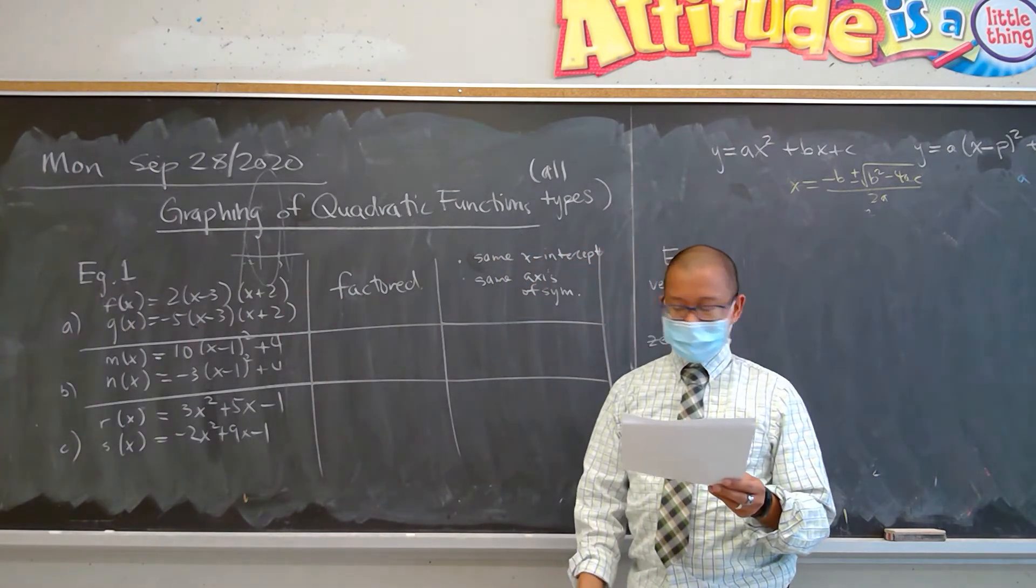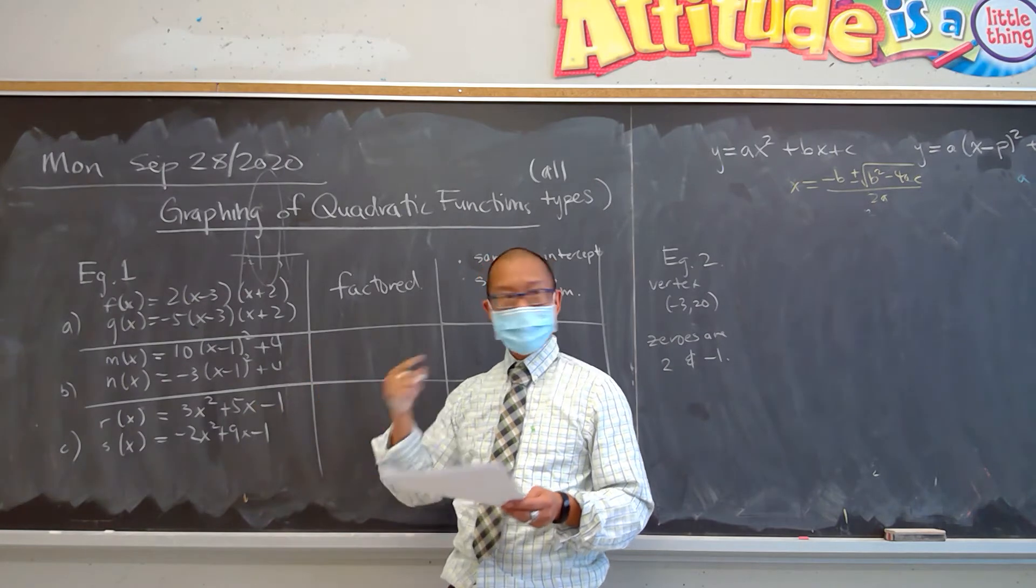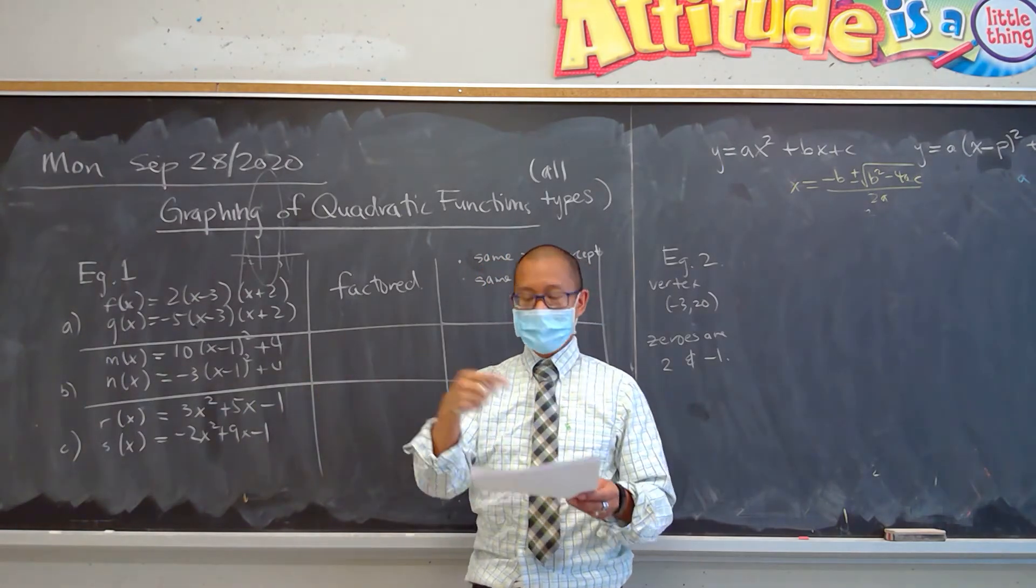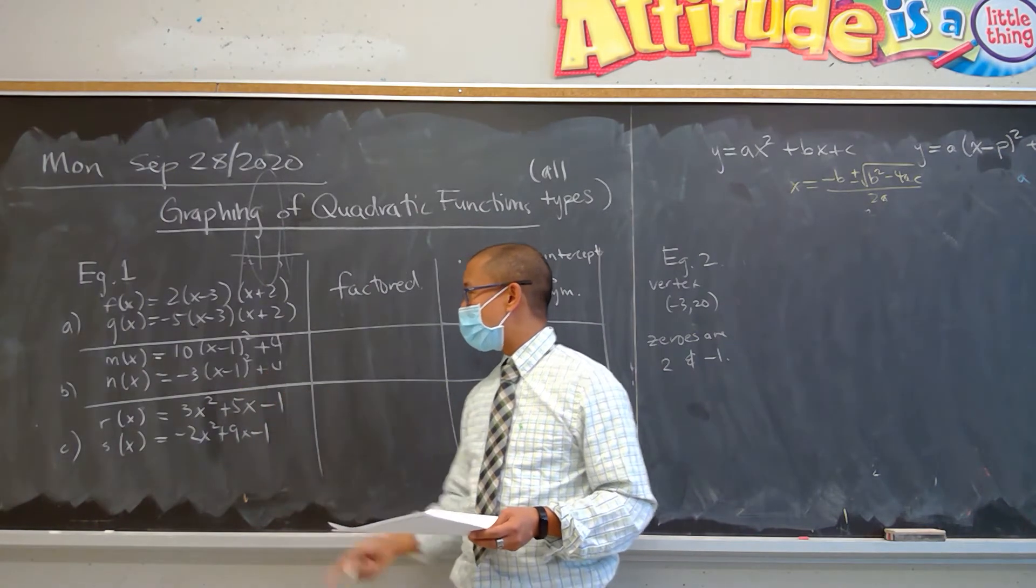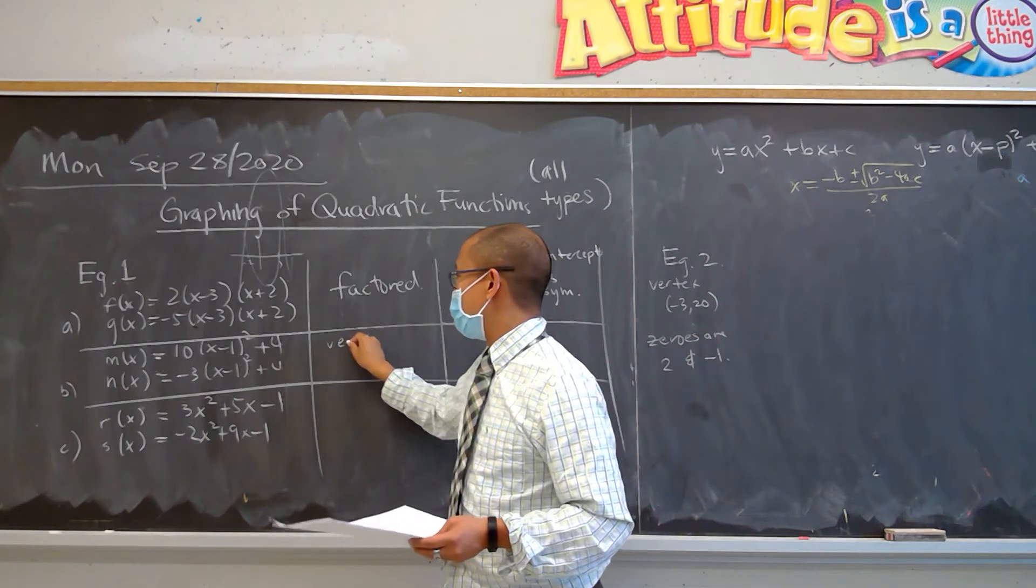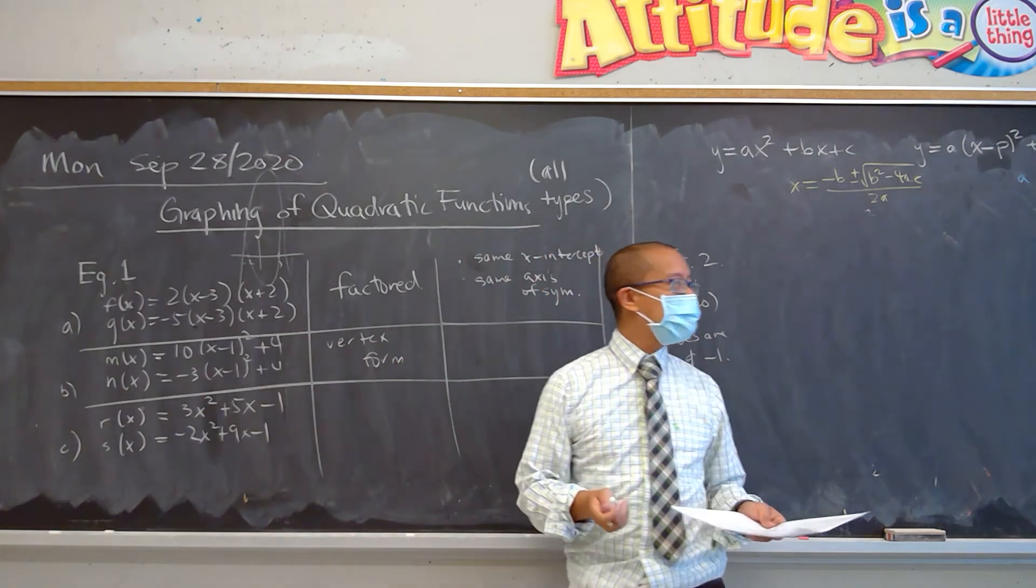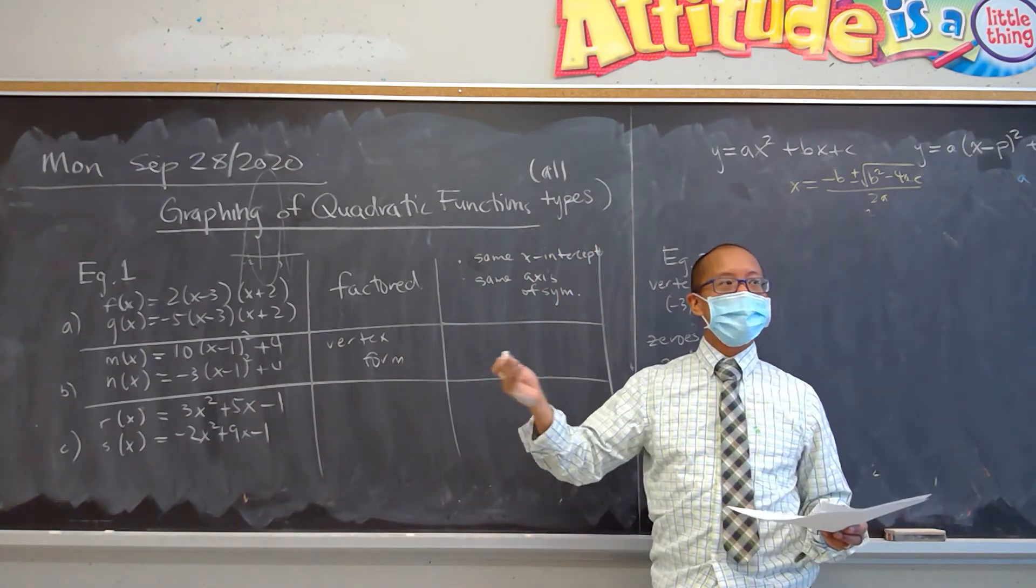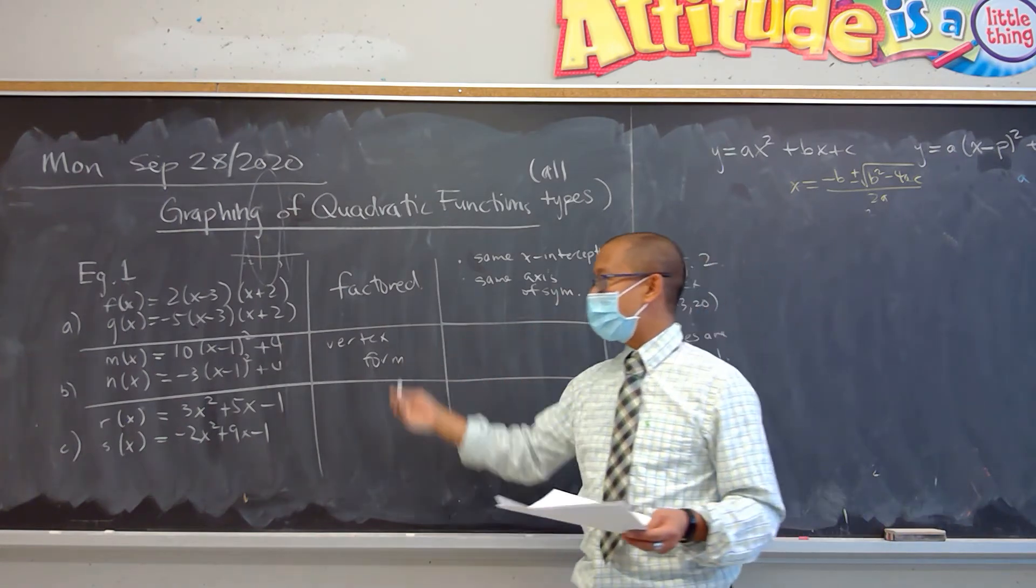Question B though. I think everyone agrees if you read it. m(x) equals 10(x minus 1)² plus 4, and n(x) equals negative 3(x minus 1)² plus 4. Do you clearly realize that this is both vertex form? And again, it might not be so obvious.